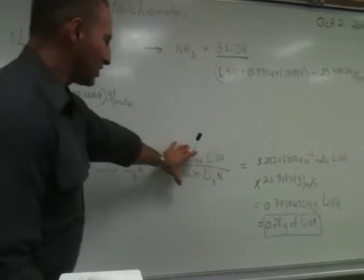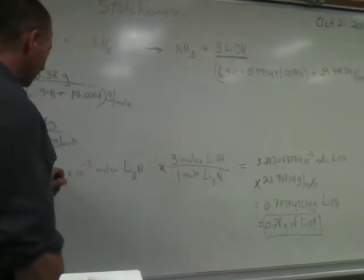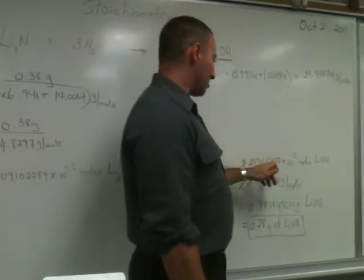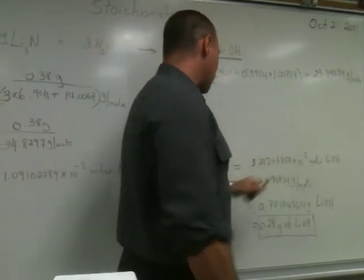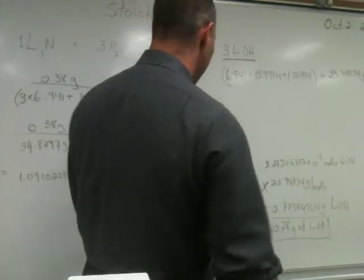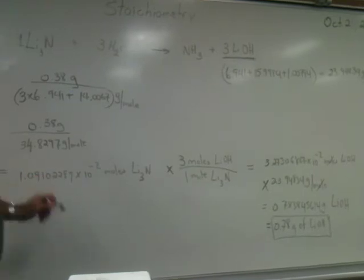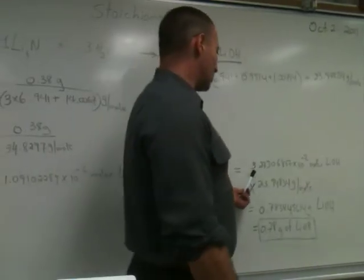So that conversion factor is inserted here to predict, when multiplied by this number, how many moles of lithium hydroxide are going to be produced. And that's what we have here. So three times as many moles of lithium hydroxide is produced as lithium nitrite. And that's how many moles of lithium hydroxide we get.